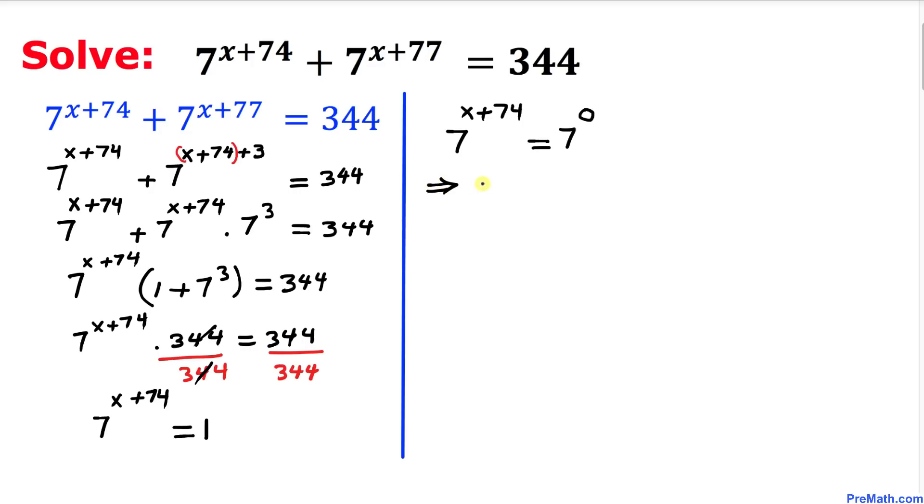So therefore we got x plus 74 equal to 0. So that's our solution: x equal to negative 74. So that's our solution, turns out to be negative 74.